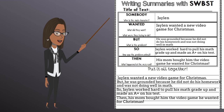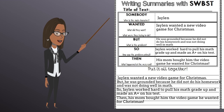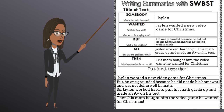Now let's summarize the story using our Somebody, Wanted, But, So, and Then graphic organizer to guide us. First, let's answer the question for Somebody: Who was the main character in the story? The main character was Jalen. Second, let's answer the question for Wanted: What did Jalen want? Jalen wanted a new video game for Christmas.